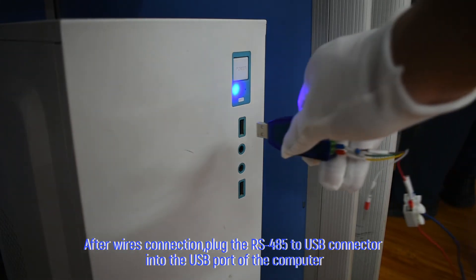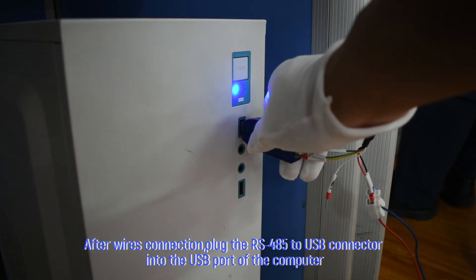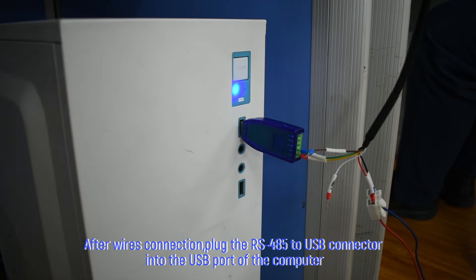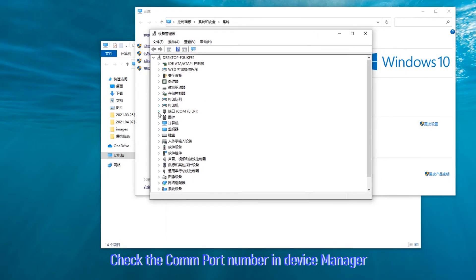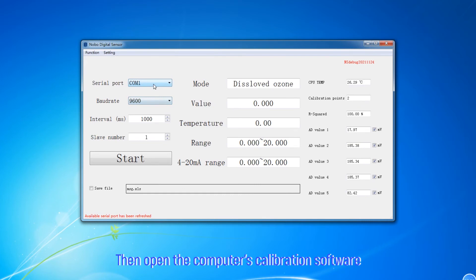After wire's connection, plug the RS485 to USB connector into the USB port of the computer. Check the COM port number in Device Manager, then open the computer's calibration software.